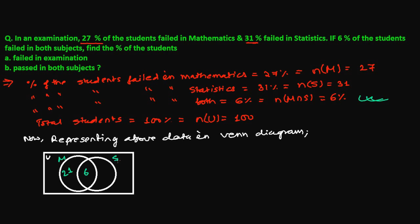Now the turn of statistics. Total statistics learners who failed — the percentage who failed in statistics is 31%. And out of 31%, I have already written 6%, so the rest is 25%. So 21% just failed in mathematics, 25% just failed in statistics, and 6% failed in mathematics as well as statistics.